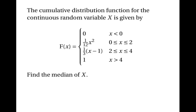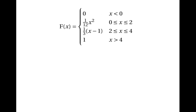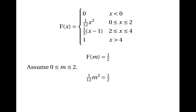Let's look at a third example. Suppose the cumulative distribution function is defined in four pieces and we have to find the median. F(x) is zero when x is less than zero, and one when x is greater than four. Between zero and two it's one twelfth x squared, and between two and four it's one third x minus one. We solve F(m) equals a half. First, assuming m is between zero and two gives one twelfth m squared equals a half, so m squared equals six, meaning m equals approximately 2.45 — but this can't be right because 2.45 is not between zero and two.